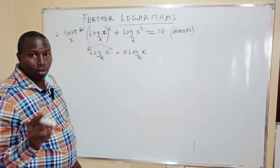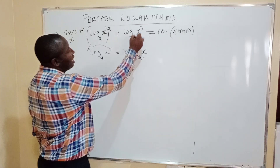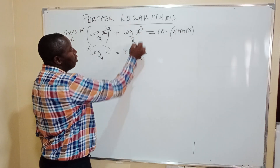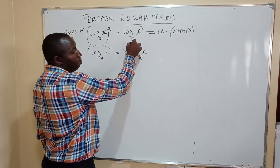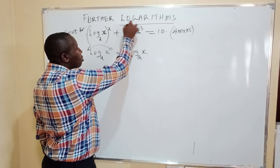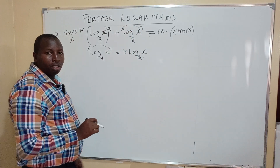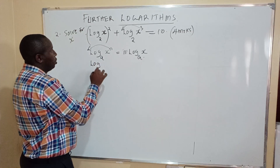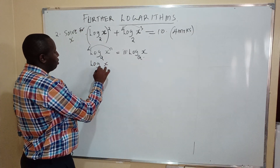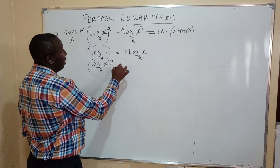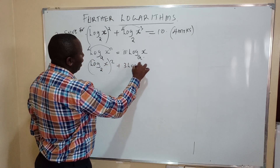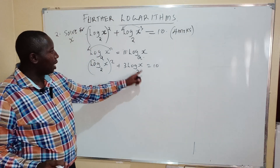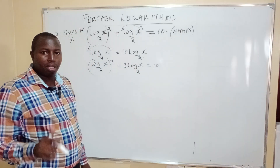In the second term, you can apply the rule of logarithms, because this is log x cubed to base 2 — you can bring the 3 down. So the equation becomes: log of x to base 2, quantity squared, plus 3 log of x to base 2, equals 10.